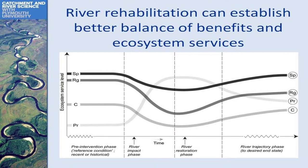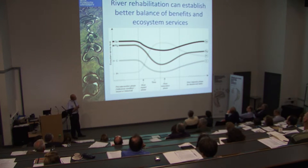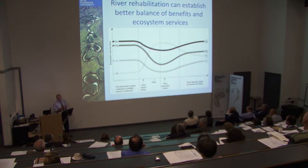We can see this in this theoretical diagram, which is a timeline. We've got different types of services discussed earlier, and in the river impact phase we've simplified the river through embankment and straightening to allow floodplain agriculture to take place. With provisioning services it's resulted in an expansion of agricultural activity on the floodplain, but at the expense of other ecosystem services such as flood alleviation, carbon sequestration, and biodiversity.